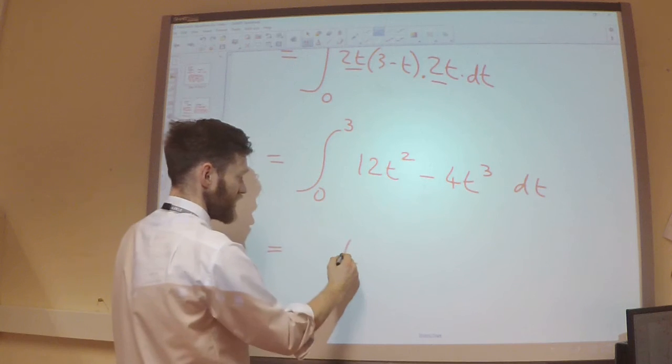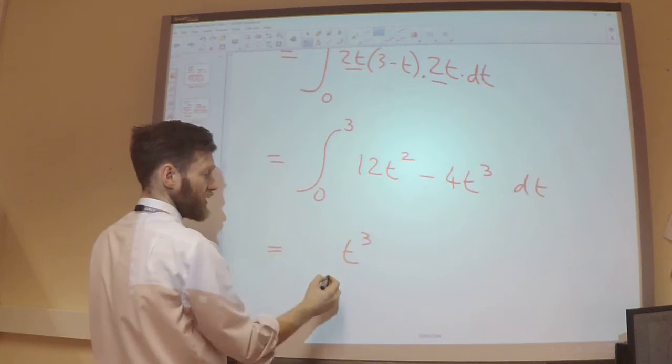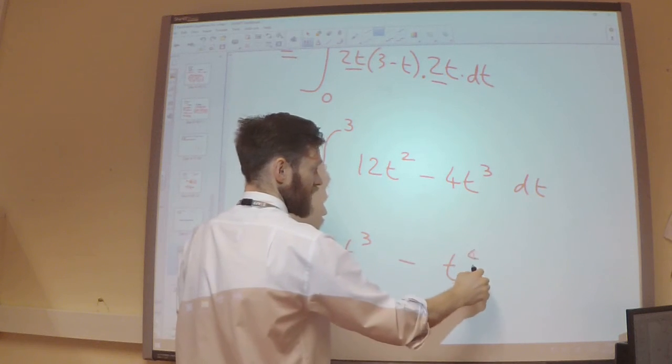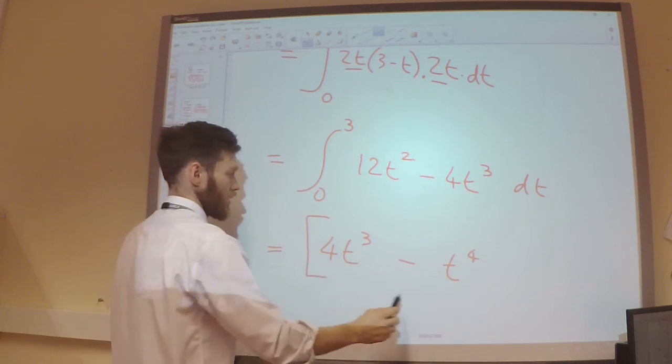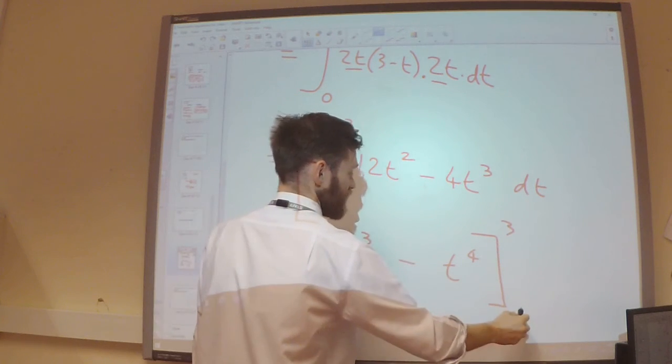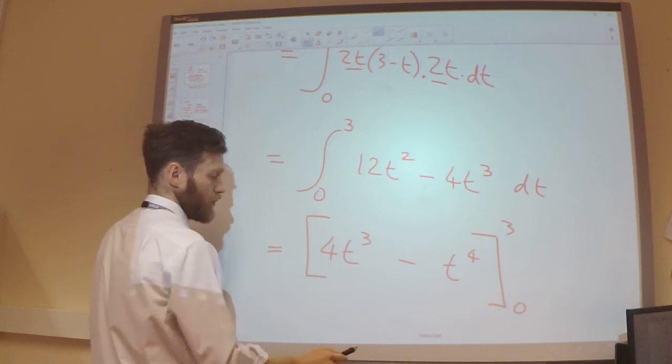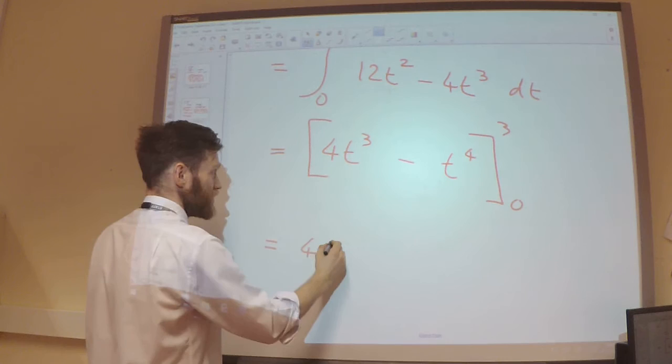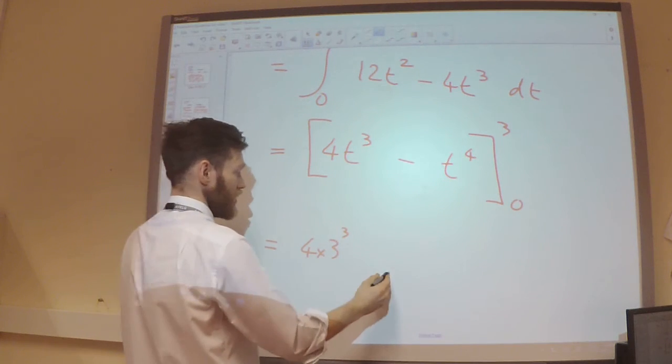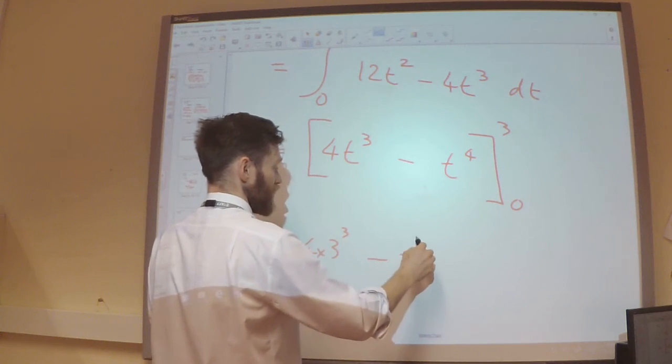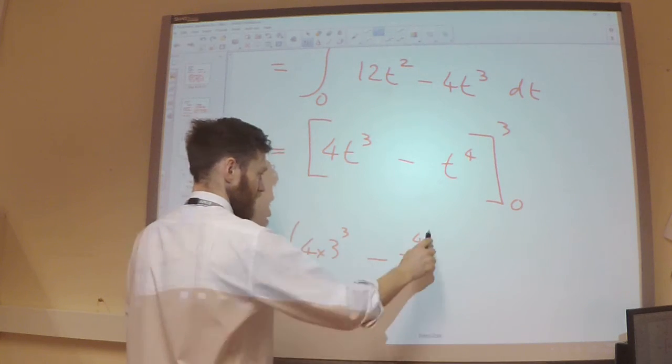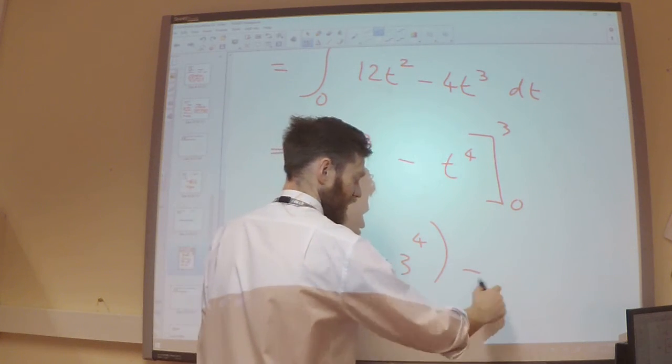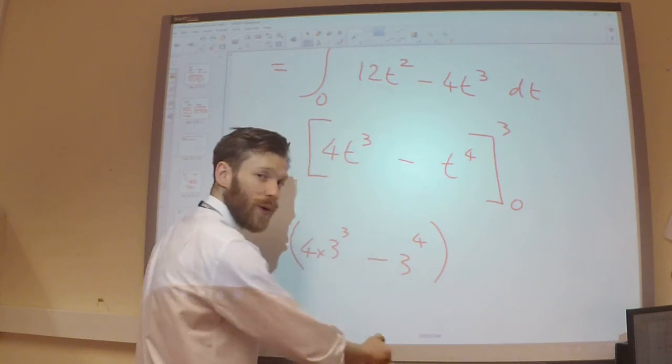Now let's do the integration. This is going to raise the power to cubes. Divide by 3 would be 4. Over here, raise the power to 4, divide by 4, so it's going to be a 1. Between the limits of 3 and 0. Substitute the values in now. So I'll get 4 times 3 cubed minus 3 to the power of 4. Substituting 0 into both of those is going to be 0, so actually I don't really need to worry about the taking away 0 here.